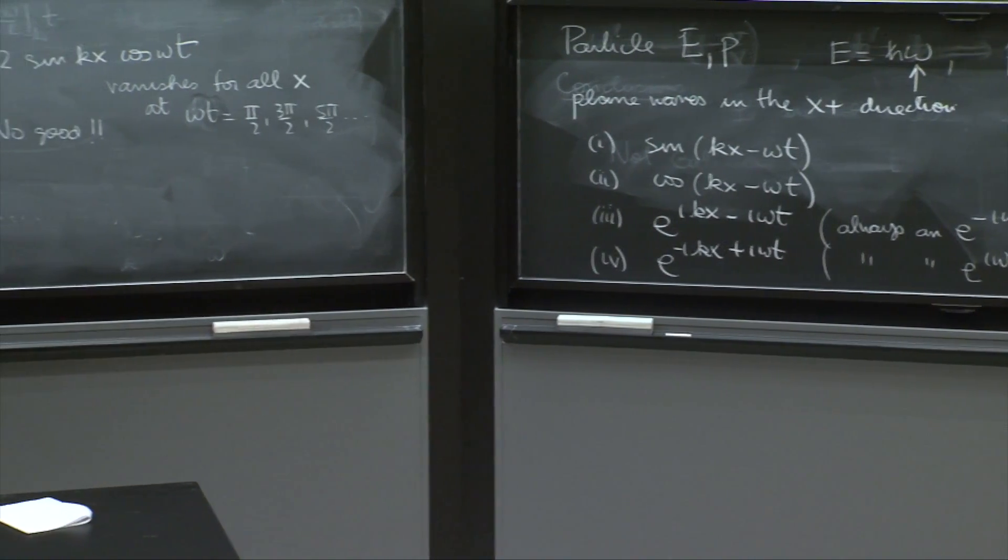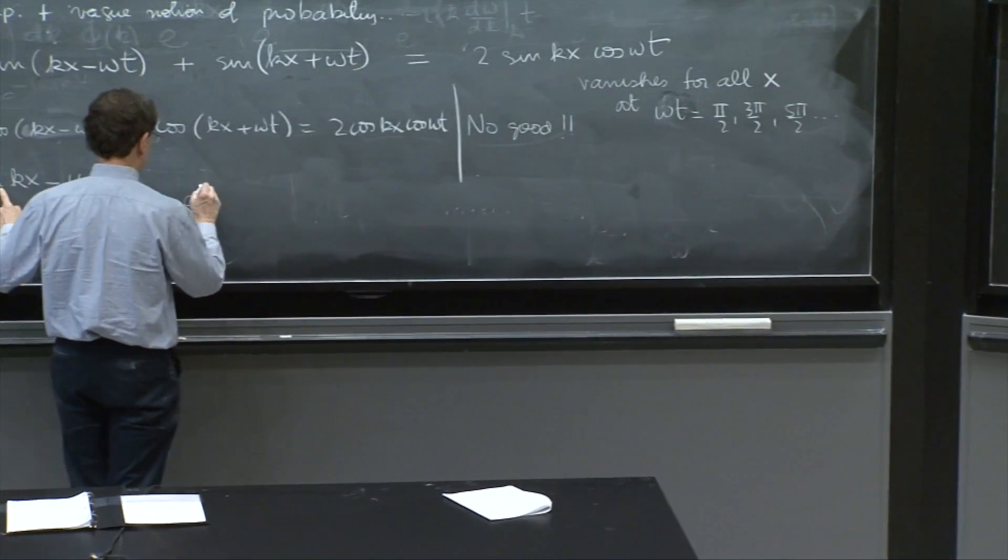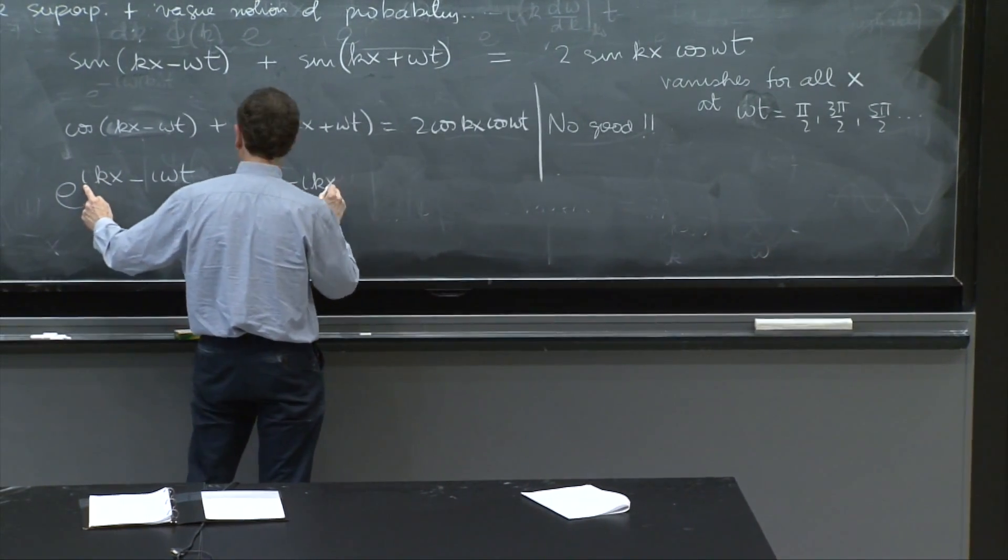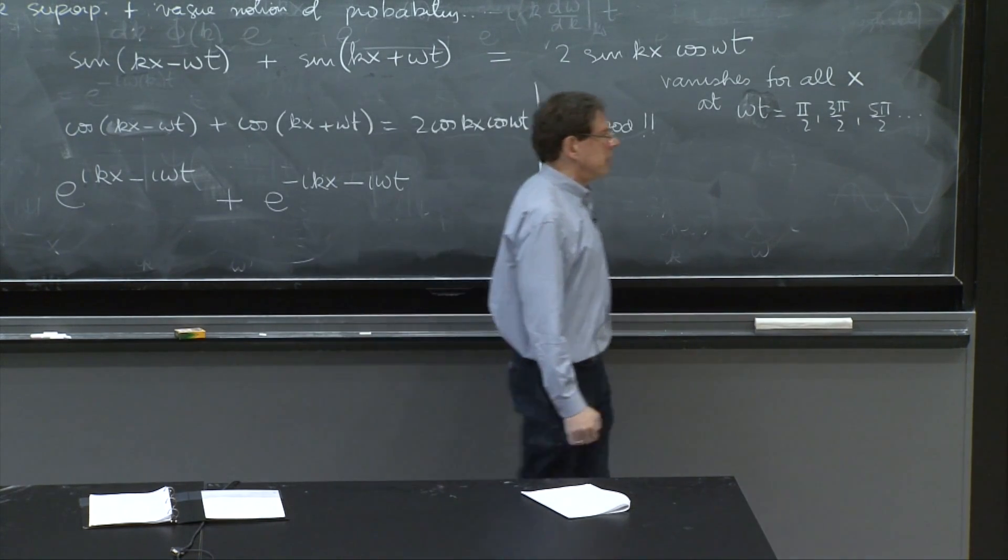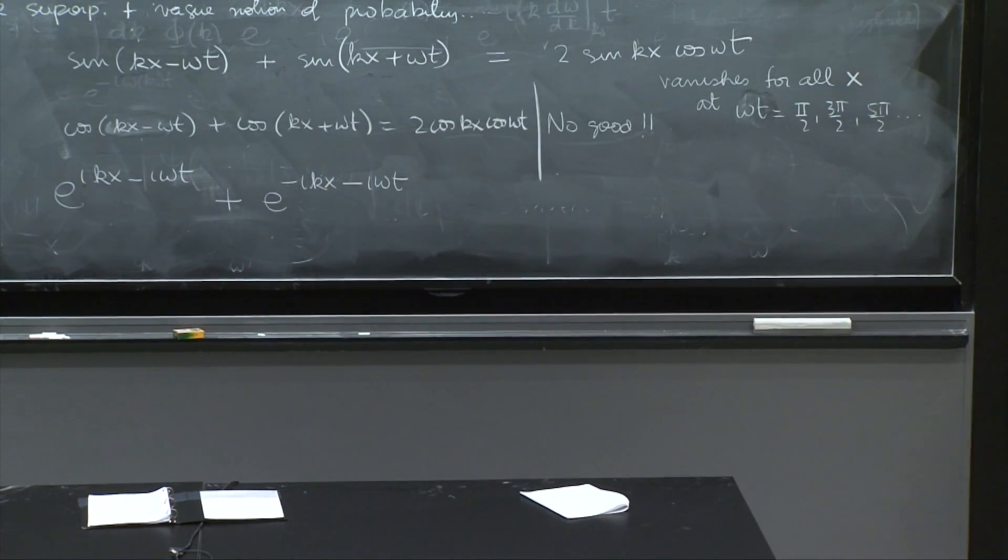So to get a wave that moves in the opposite direction, we have to do minus ikx minus i omega t, because I cannot change that phase. Always this energy.